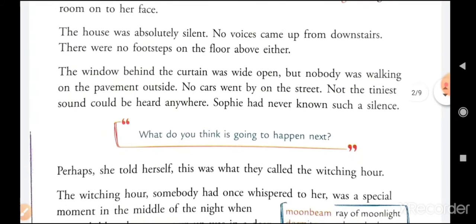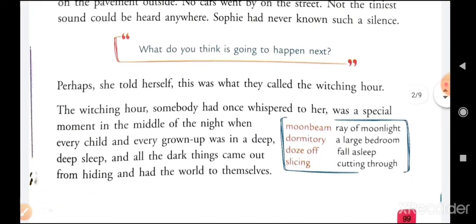Sophie had never known such a silence. What do you think is going to happen next? Perhaps, she told herself, this was what they call the witching hour. The witching hour, somebody had once whispered to her, was a special moment in the middle of the night when every child and every grown-up was in a deep sleep, and all the dark things came out from hiding and had the world to themselves.